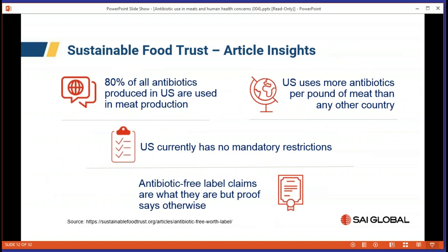The Sustainable Food Trust found that 80% of all antibiotics produced in the US are used in meat production. The US uses more antibiotics per pound of meat than any other country in the world, and we have no mandatory restrictions. Their survey also found that antibiotic-free label claims were not always what they said — people were claiming it but couldn't actually prove it.